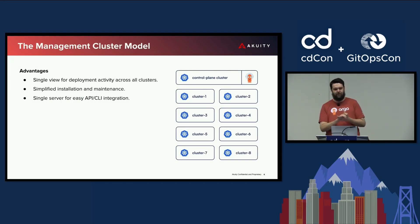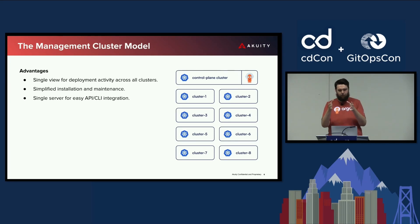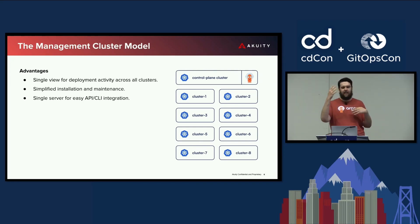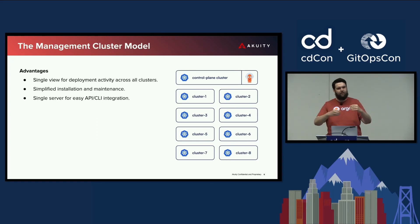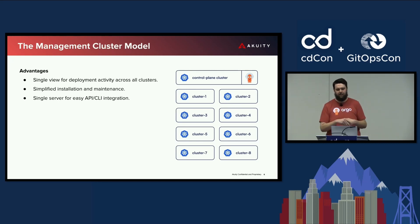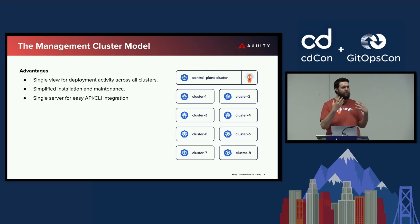The primary advantage of the management cluster model is that you have a single view for all deployment activity across all of your clusters. You have a single control plane that simplifies installation and maintenance of Argo CD — you only set up RBAC, SSO, repo credentials, and app projects in one location. You also have a single server for easy API and CLI integration, and your end users — your application developers — only have one place to go to see everything they need.